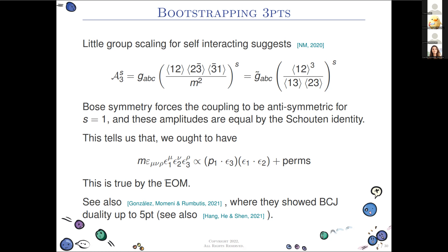When you bootstrap it via little group scaling, because there are two things you can write down that are invariant with correct mass dimensions, they're equal by the Schouten identity, which is just reflected in the equations of motion. Also for spin one, Bose symmetry enforces that this is a gauge theory and the structure constants have to be f-abc — some Yang-Mills type theory.